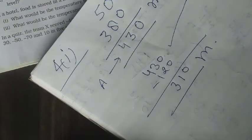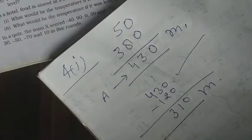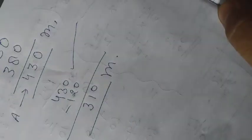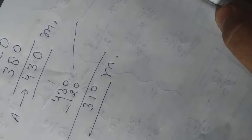Question number five. In a hotel, food is stored in a freezer at minus twenty degrees Celsius. First part, what would be the temperature if this temperature raised by five degrees Celsius?